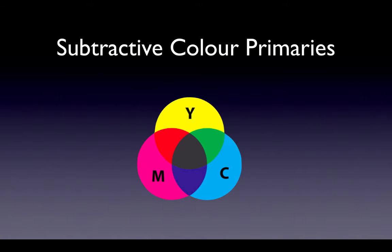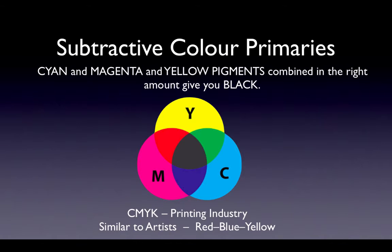Remember reflection from earlier. That process removes wavelengths of light from getting into our eyes. That's why this system is called subtractive — it takes away wavelengths of light. Applying enough different pigments takes away all wavelengths and that gives us black.